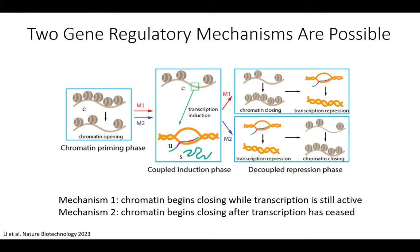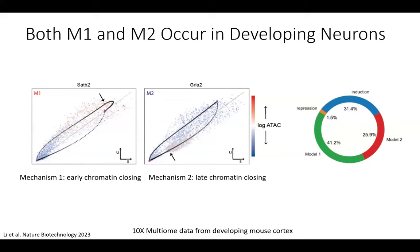Another qualitative prediction is that there are two potential orders of events when a gene is turned on and then off — we call these Model 1 and Model 2. In Model 1, chromatin can begin closing while transcription is still active. In Model 2, chromatin begins closing only after transcription has ceased. In principle, we should be able to distinguish between these scenarios by fitting different combinations of parameters and comparing the data likelihood.